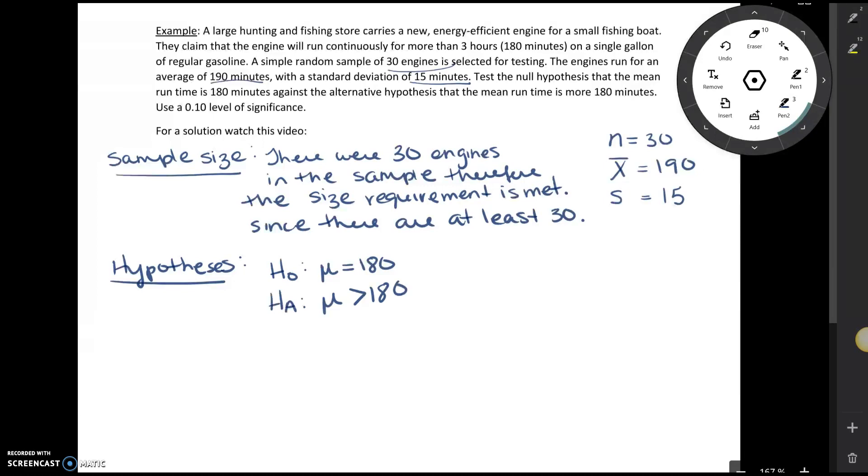Our next step is to calculate our test statistic. We're working with a t distribution or a t statistic since we're working with the mean. Our formula is going to be x bar minus mu naught divided by s divided by the square root of n. Now mu naught, what that comes from—notice the only other place we see this subscript zero is in the null hypothesis. So mu naught is always going to be equal to the value of the parameter that you see in the hypotheses.